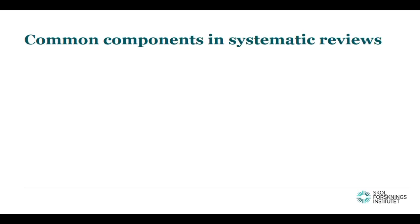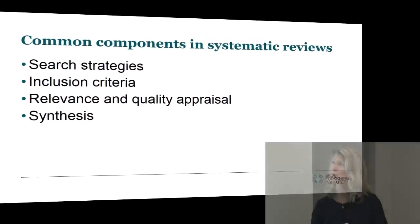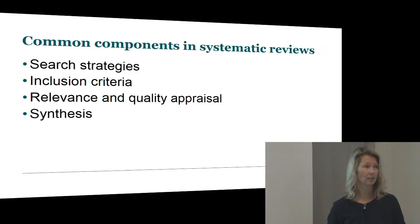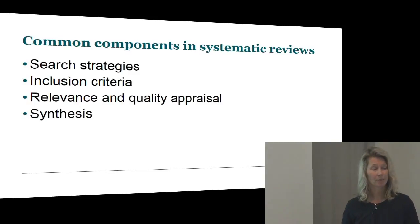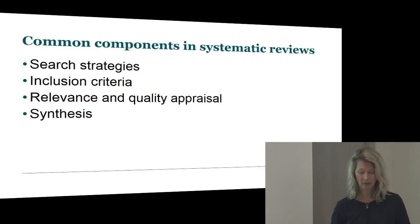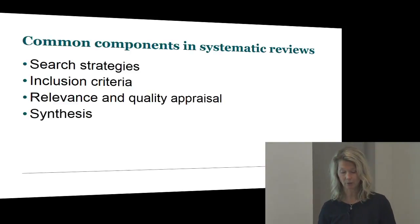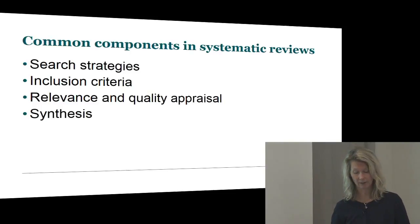As you know, there are different steps in the systematic review: the search strategies, inclusion criteria, relevance and quality appraisal, and the synthesis. But beyond these commonalities, there is considerable diversity, since the methods used depend on the review question and the primary research included in the review. And one thing that differs is the synthesis.